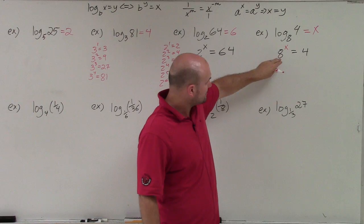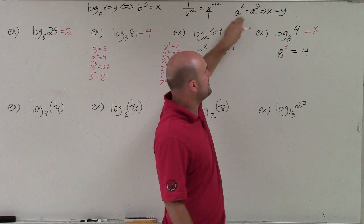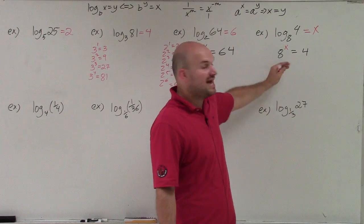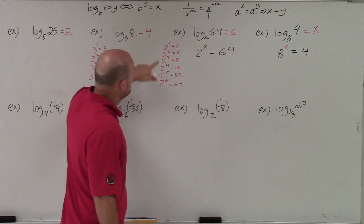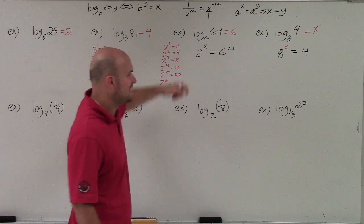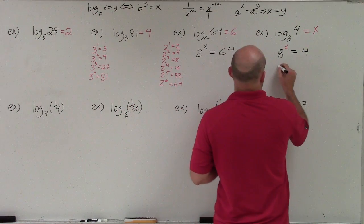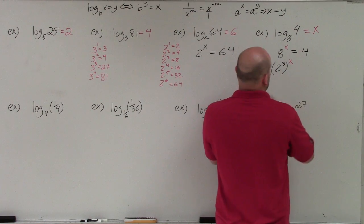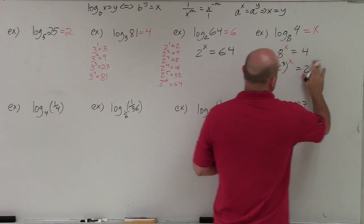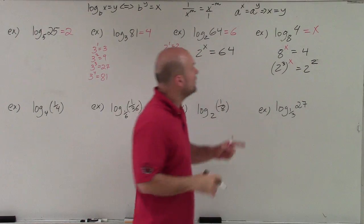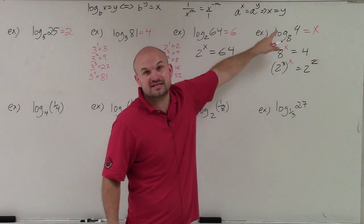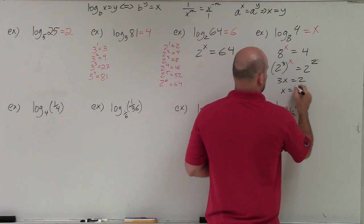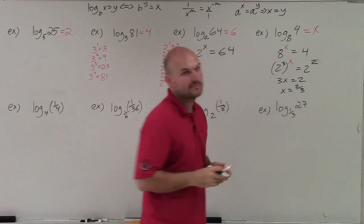Well, 8 and 4 do not have the same base. But you can use the same base of 2, because 2 squared is 4, and 2 cubed is 8. So then what I do is I rewrite this as 2 cubed raised to the x equals 2 squared. Now that they have the same base, I can just set the powers equal to each other. So I have 3x is equal to 2. So x equals 2 thirds.